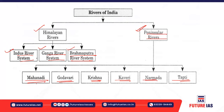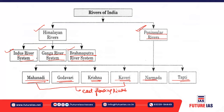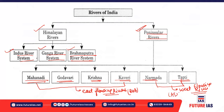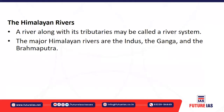Mahanadi, Godavari, Krishna, and Kaveri are east-flowing rivers — they originate in the Western Ghats and flow towards the Bay of Bengal. Narmada and Tapi are west-flowing rivers — they originate in the Eastern Ghats and flow towards the Arabian Sea.